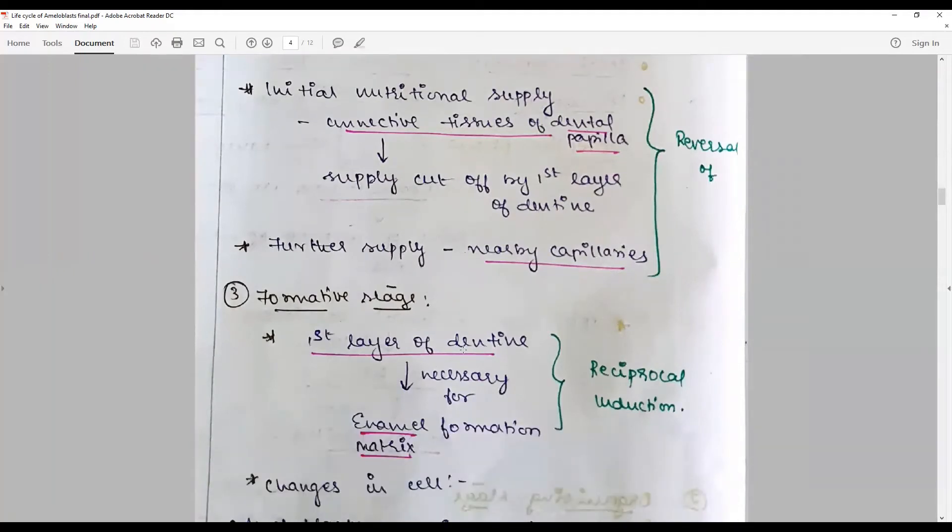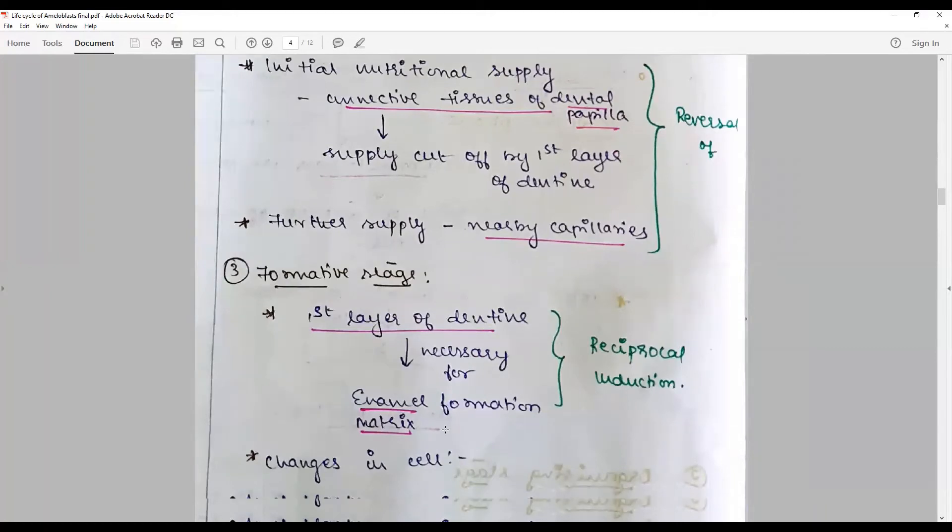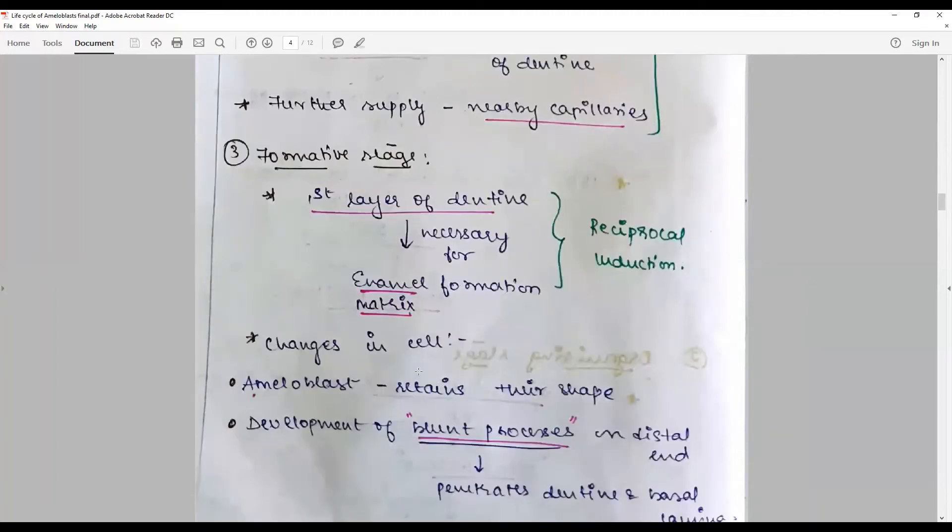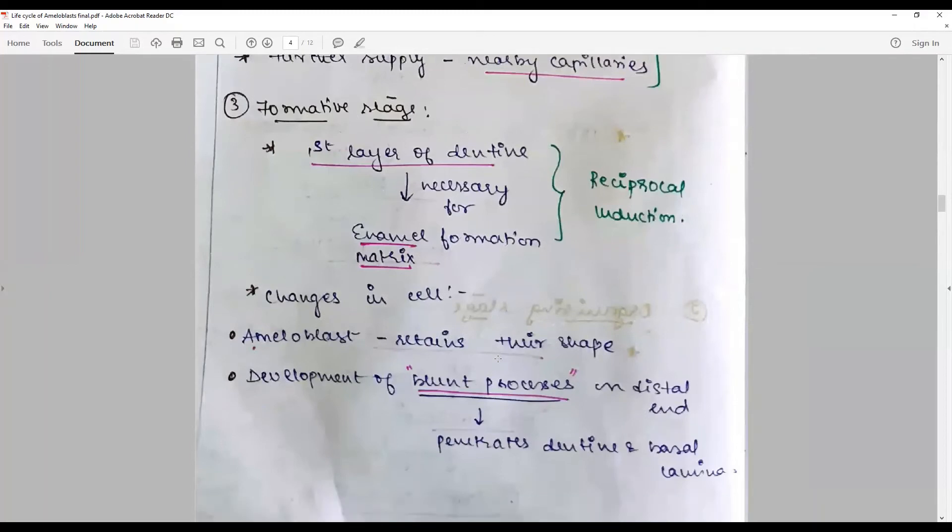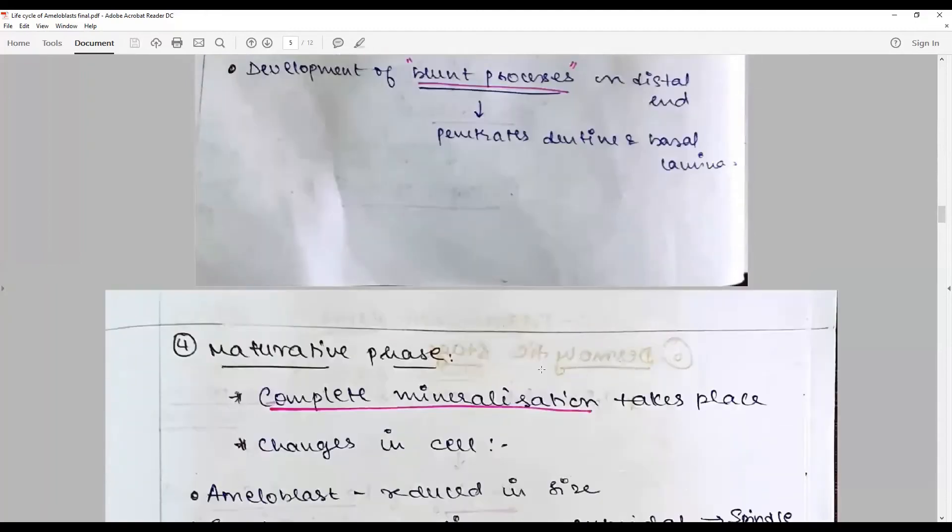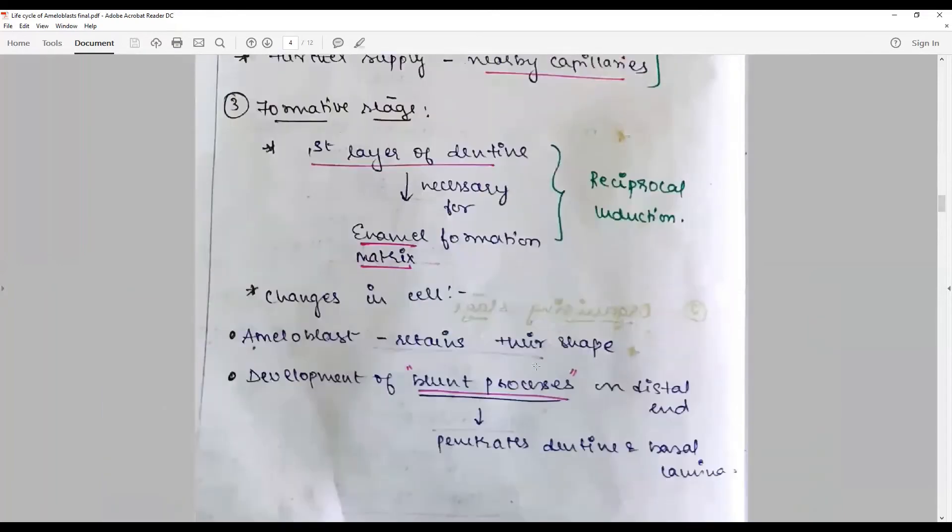The formative stage: the first layer of dentin is necessary for formation of enamel matrix. So ameloblast, by reciprocal induction, the inner enamel epithelium turns into ameloblast. The changes in cell: ameloblast retains the shelf of tall columnar, and at the same time, development of blunt processes happens on the distal end that penetrates shortly into the dentin and the basal lamina. This phase is important because they start to lay down most of the enamel matrix.